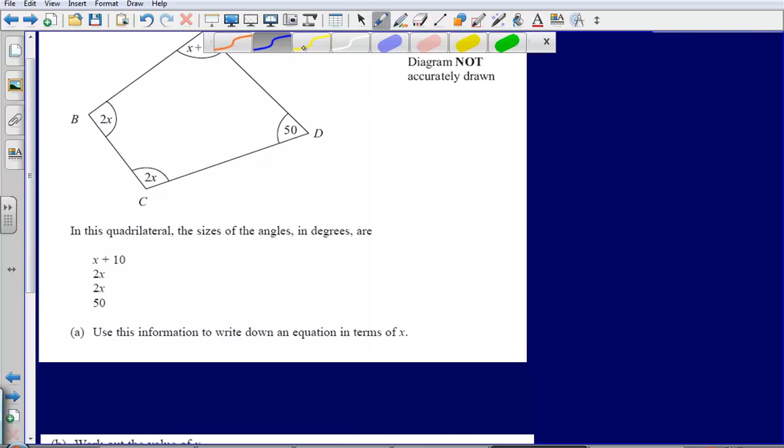So the first thing that we need to recognize is what is the shape that we've got? We've got a shape here, it's a four-sided shape, so the angles in total in a four-sided shape add up to 360.